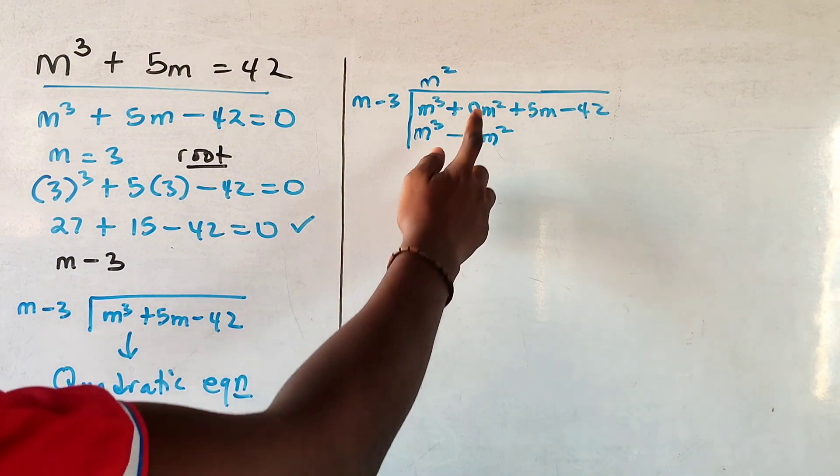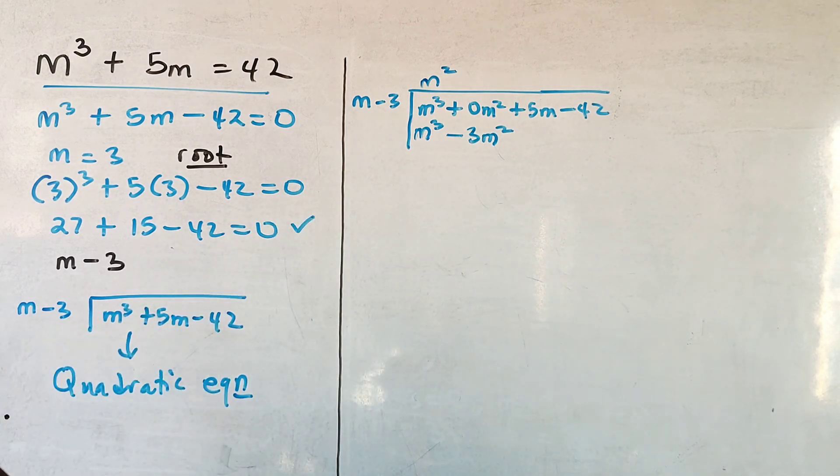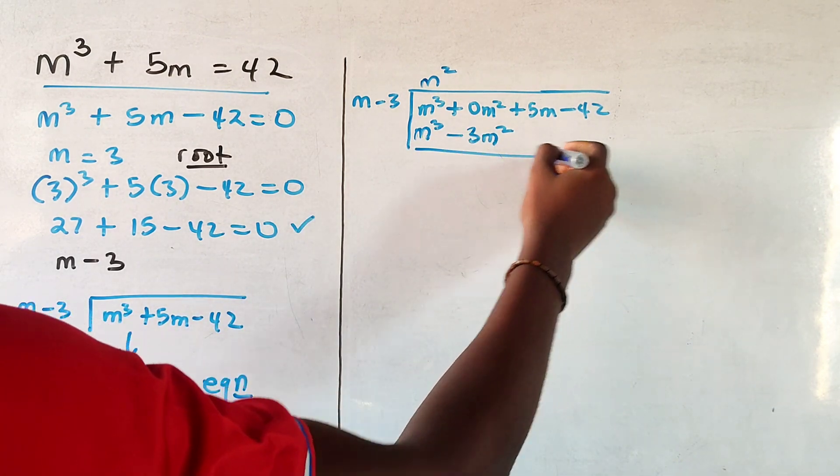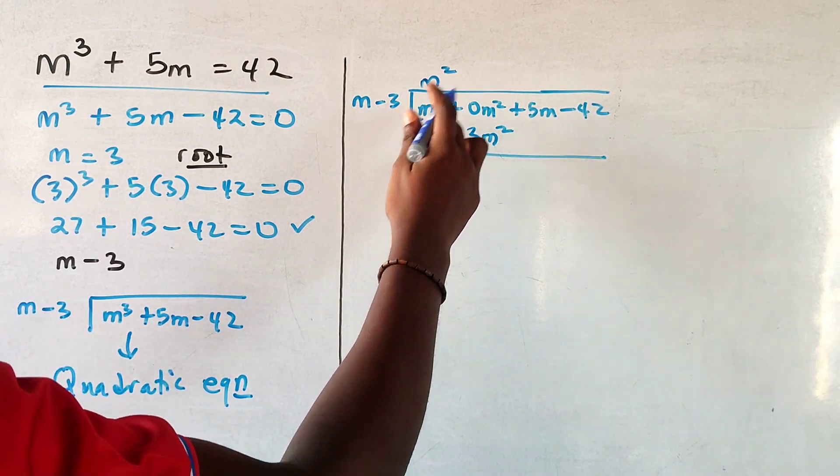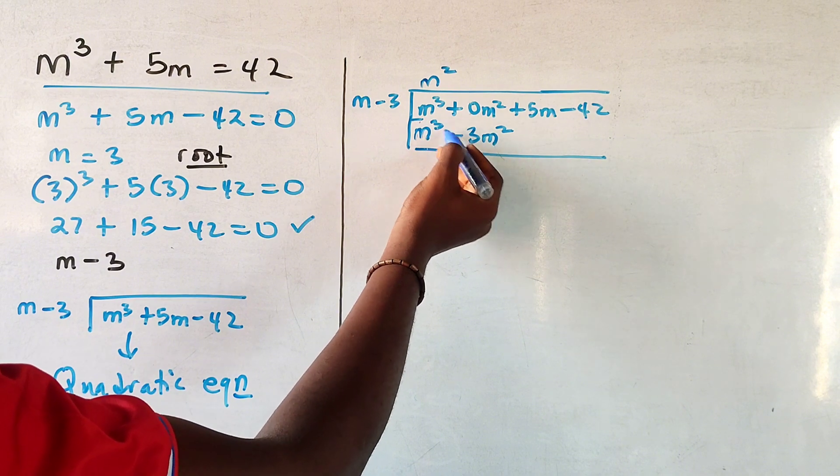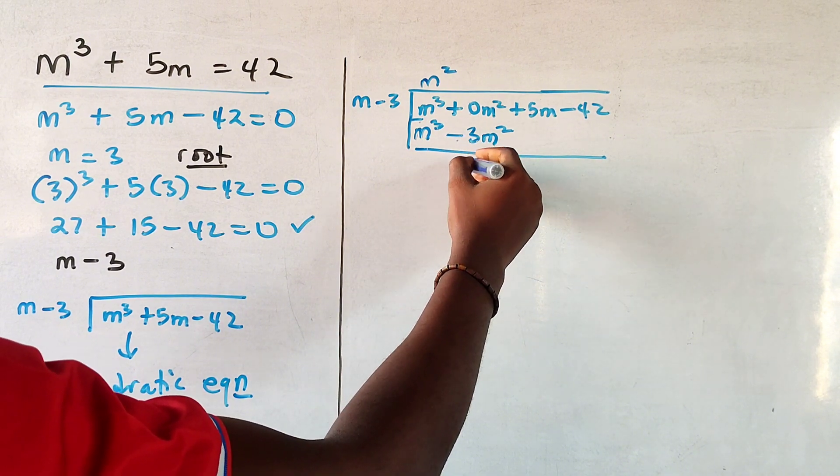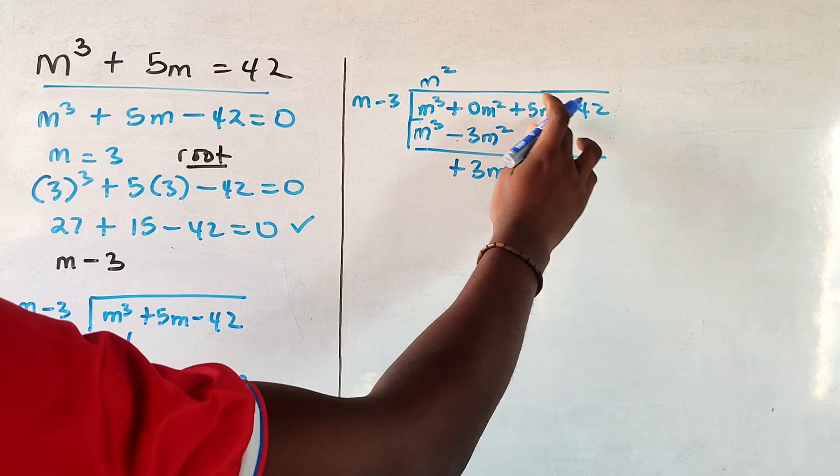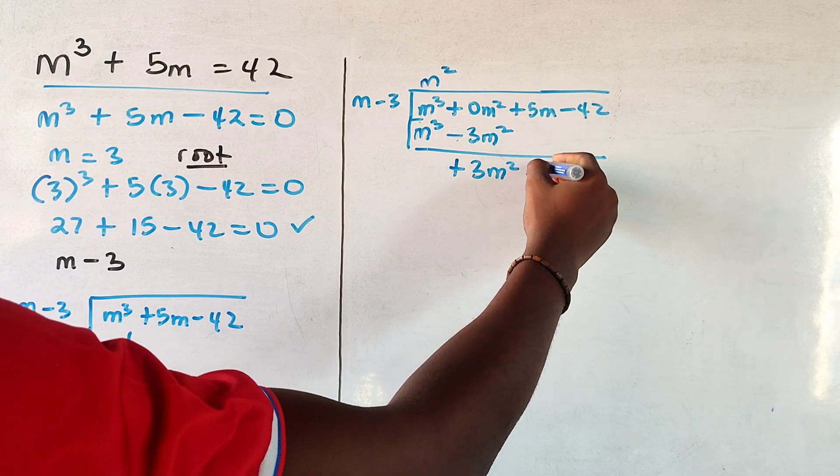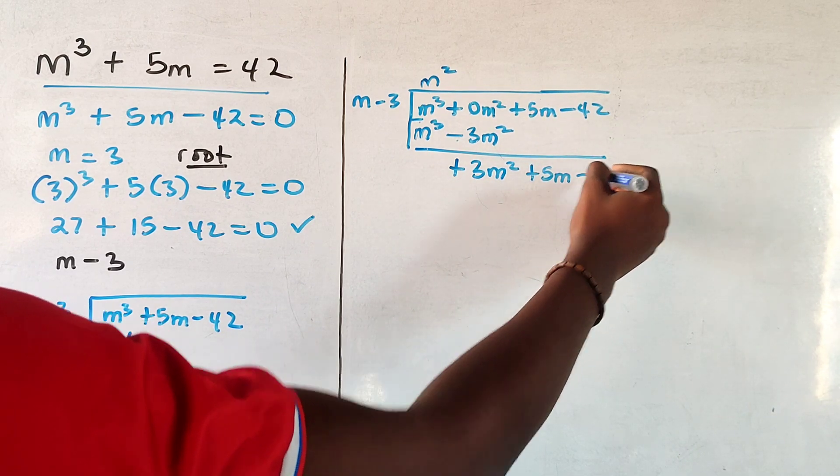Okay, so that's why I put this 0 m squared here to avoid confusion. Now when you subtract, m cubed minus m cubed goes away, and you add 0 minus minus 3, which would be plus 3 m squared. Now since there are no other numbers here, I'm going to bring these ones down, so you have 5m minus 42.